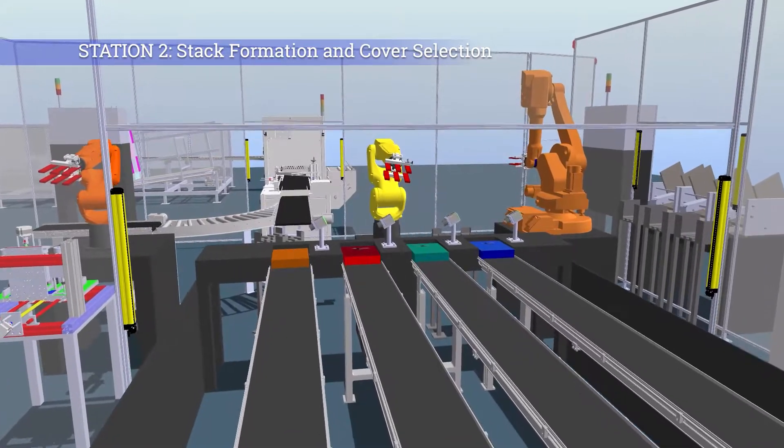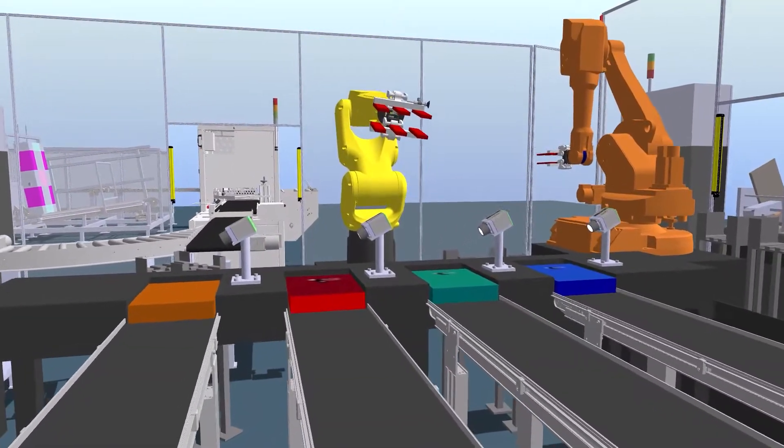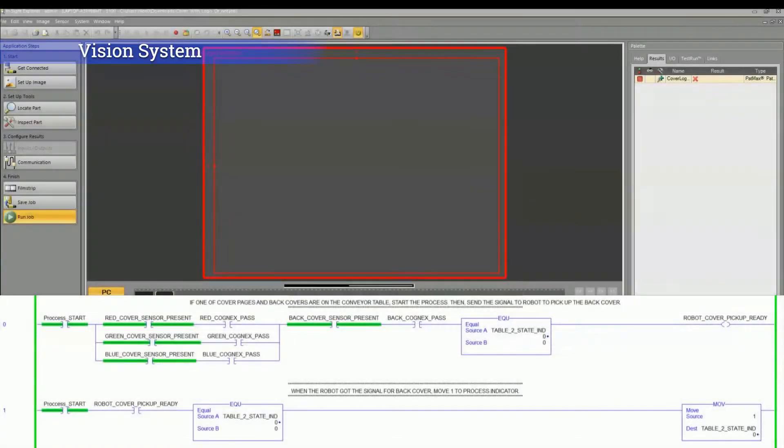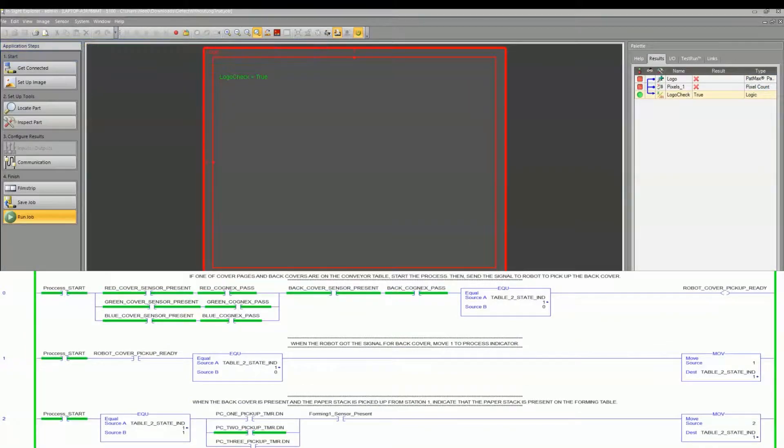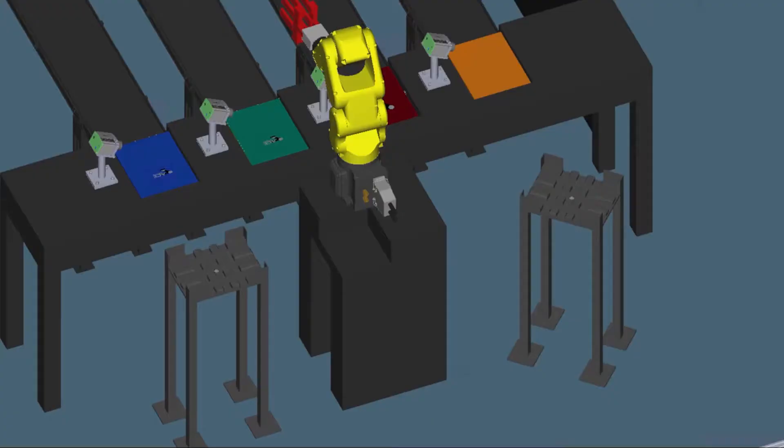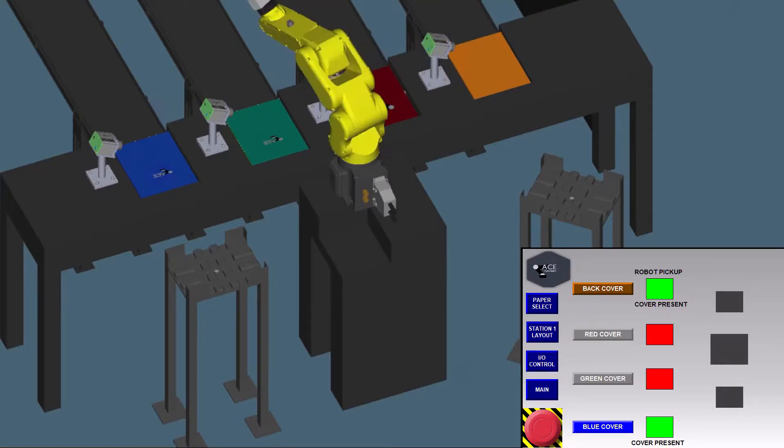For station two, the front and back covers travel down the conveyor where the vision system detects the logos. We use the Cognex camera signal which is directly coded into the PLC, so that when the logo is detected, the robot is ready to pick up the cover. While the paper is being counted at station one and the vision system check is completed.